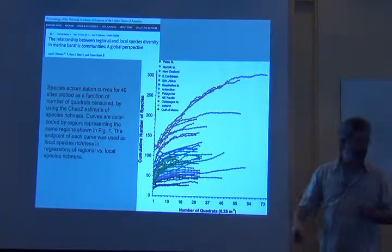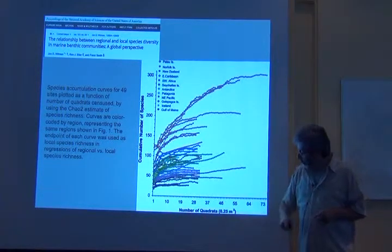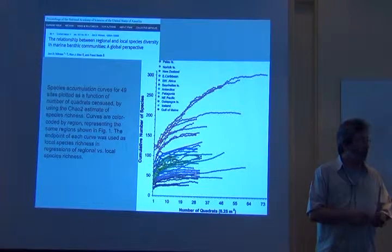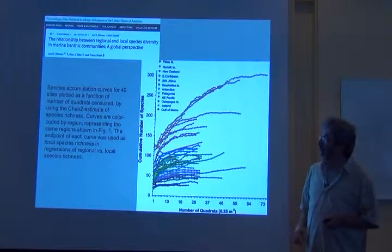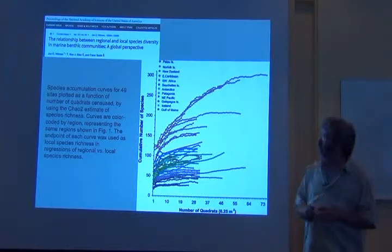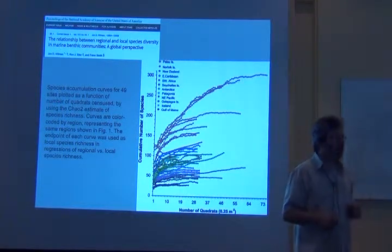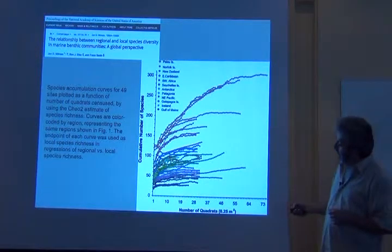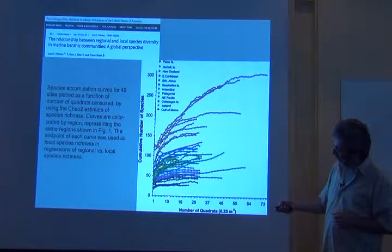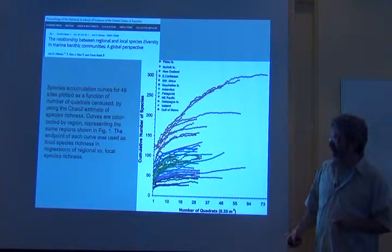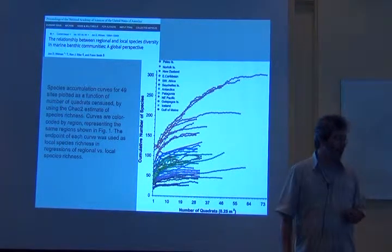We're going to see this kind of graph quite a bit. Here's the number of quadrats. These are quarter meter square quadrats, a half meter by a half meter. This research group used some standard approach where they're sampling these small areas. This is the first quarter meter quadrat and this is the tenth, and in some cases they get out to 73.